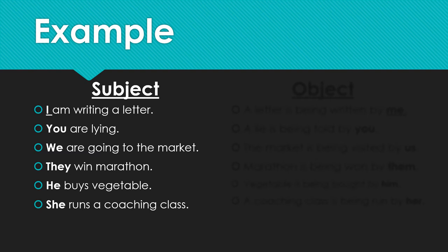For example, if we are using these as subjects when making a sentence: I am writing a letter. You are lying. We are going to the market. They win the marathon. He buys vegetables. She runs a coaching class.